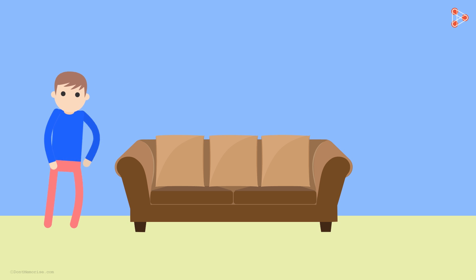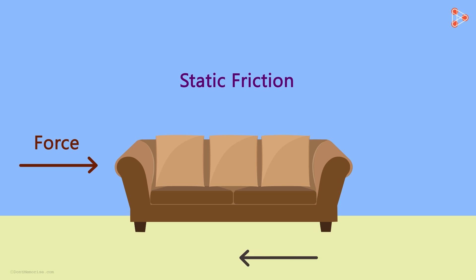Why do you think the sofa doesn't move? Well, the answer is static friction. The force that you apply is balanced by a frictional force by the floor, and this force is applied in the direction opposite to your push. This force is nothing but static friction.